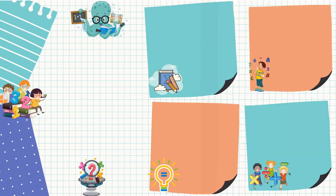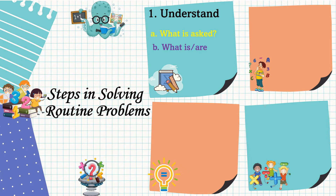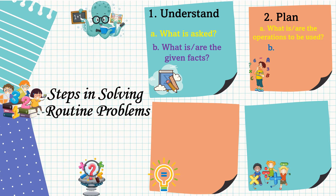These are the steps in solving routine problems. First, we should understand the problem. In understanding, read the question twice or thrice, then know what is asked and what are the given facts. Second, formulate a plan. In planning, consider the following: know what operations are to be used and what is the number sentence.